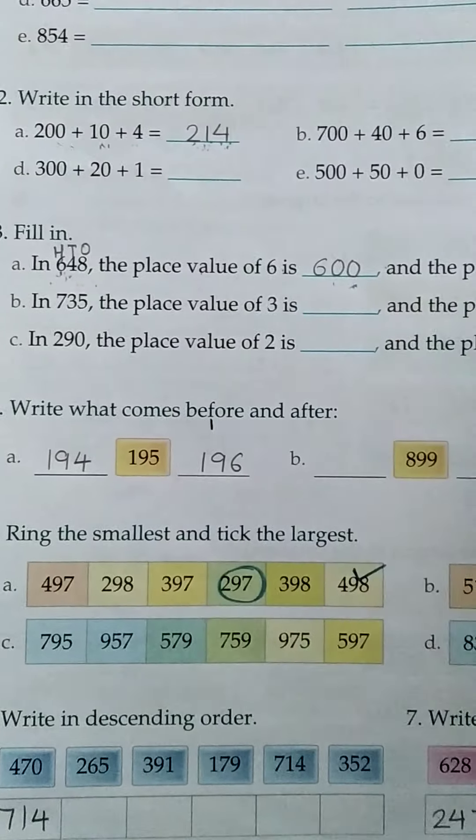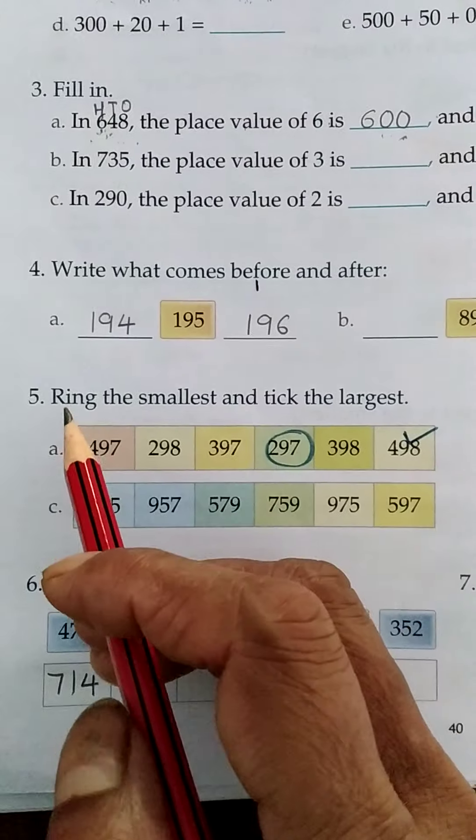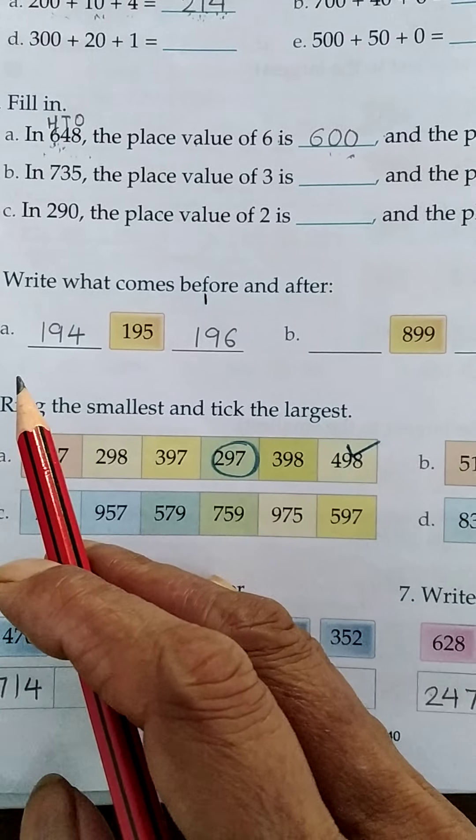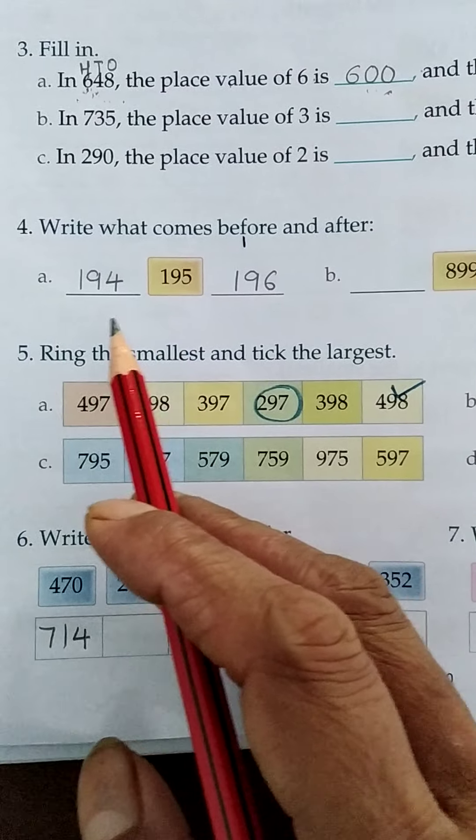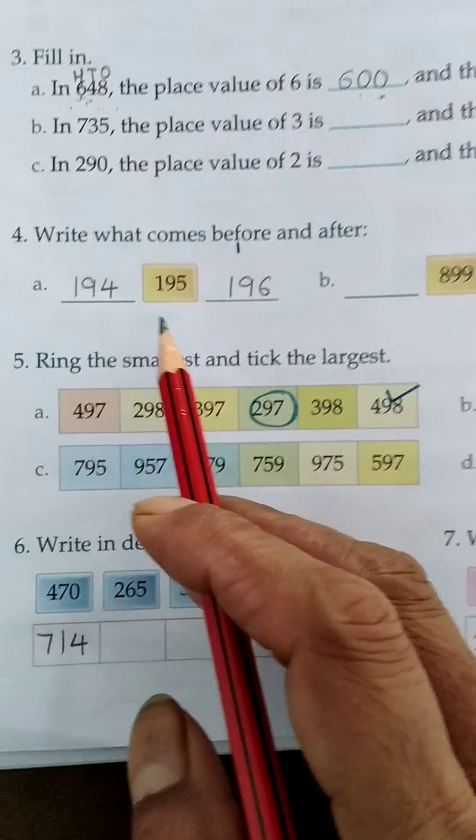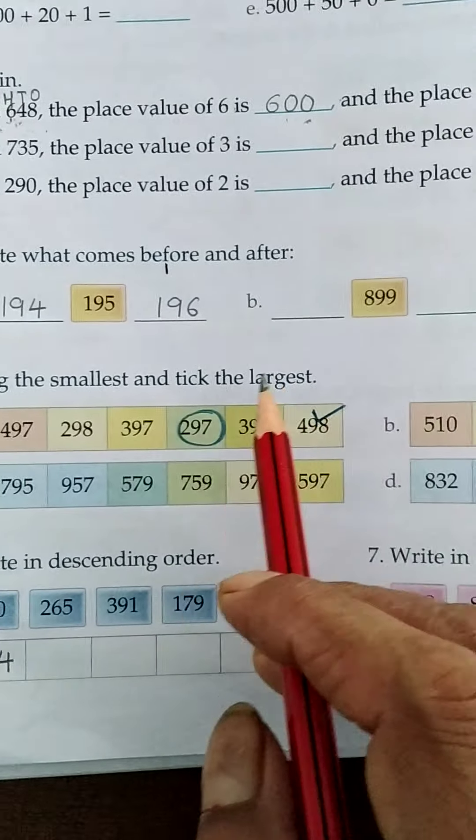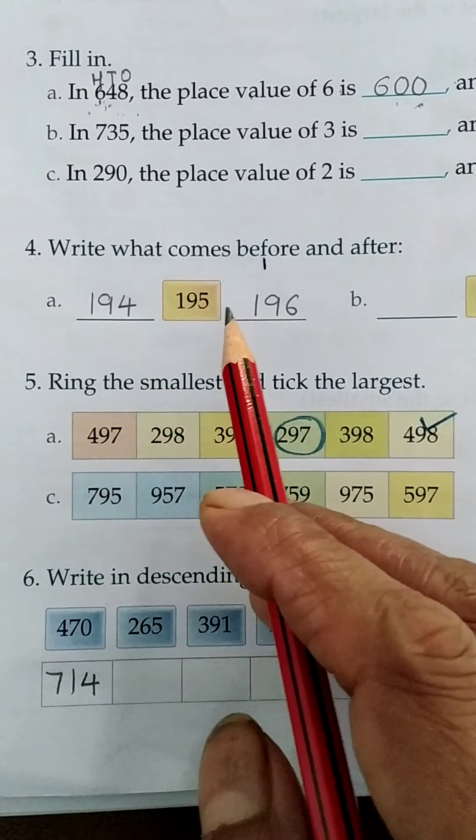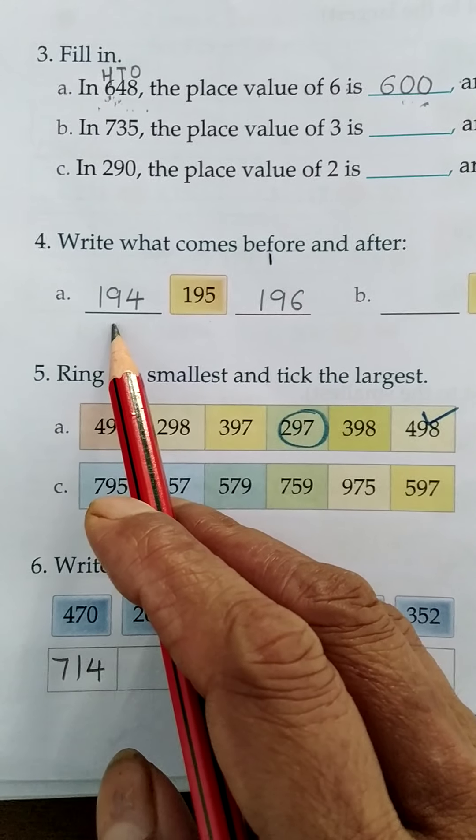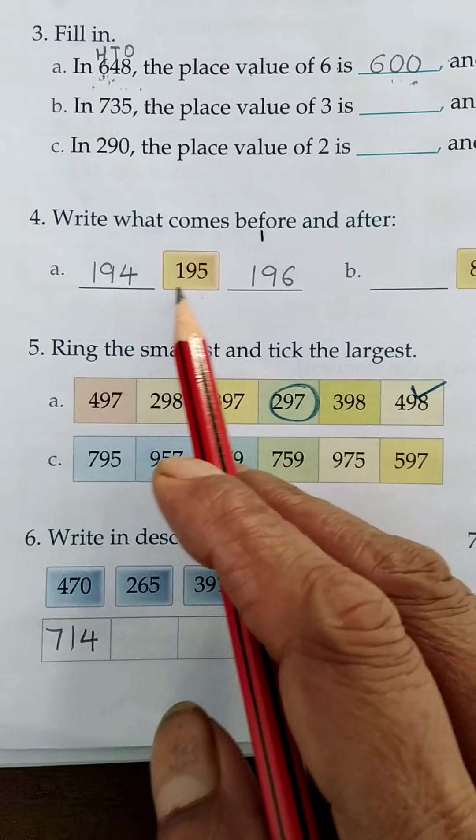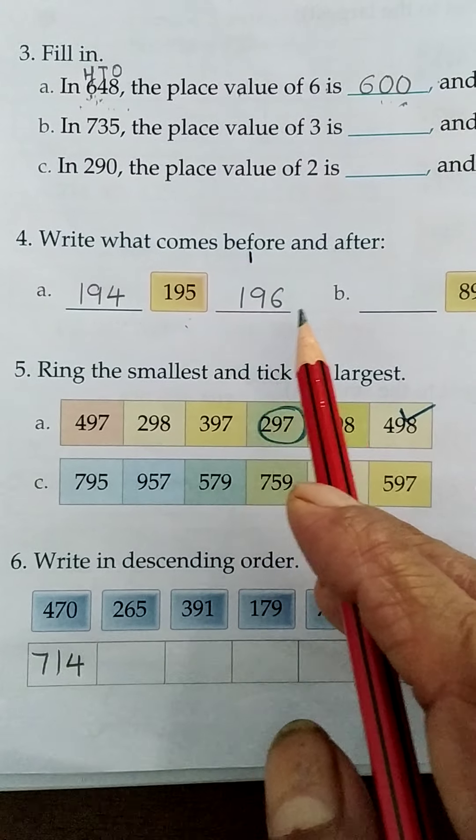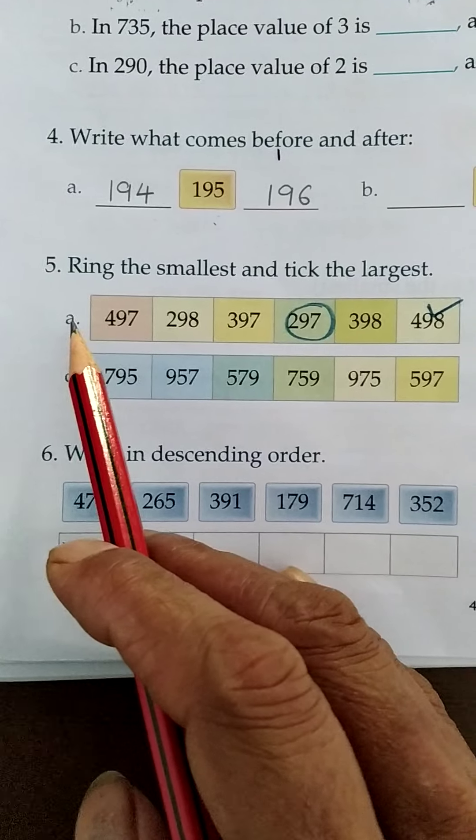This you have to do yourself. Number 4. What comes before and after. For your help I'll do one. Before 195 it comes 194. After 195 it comes 196.